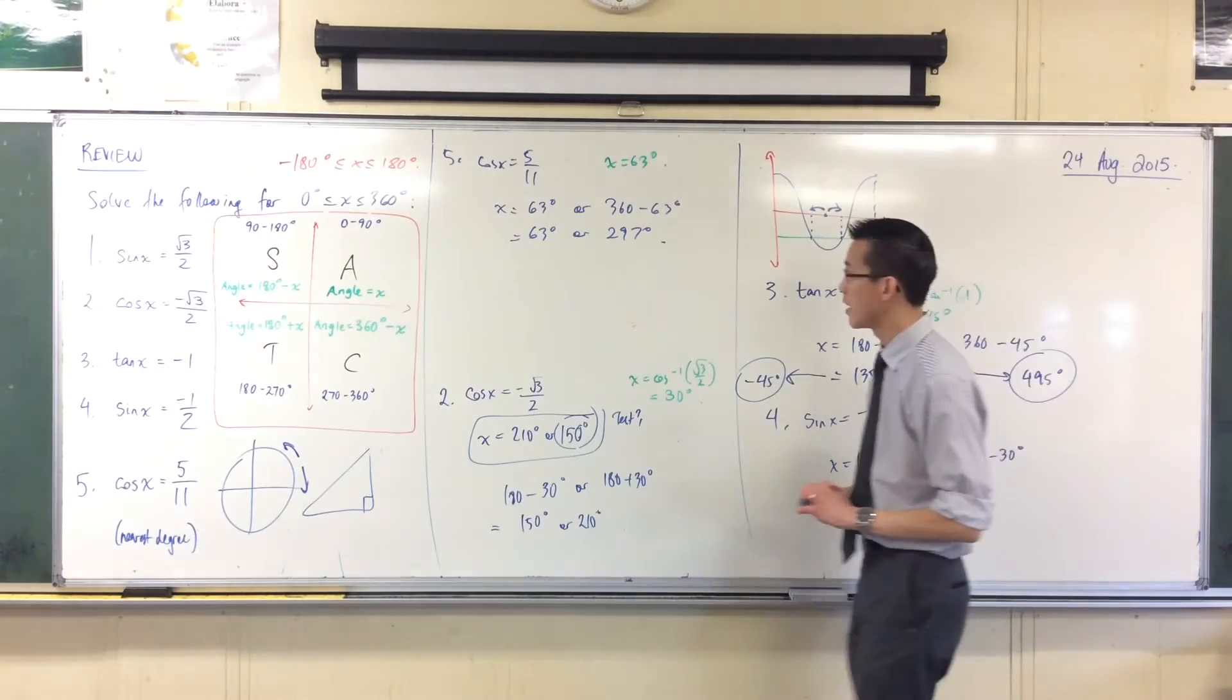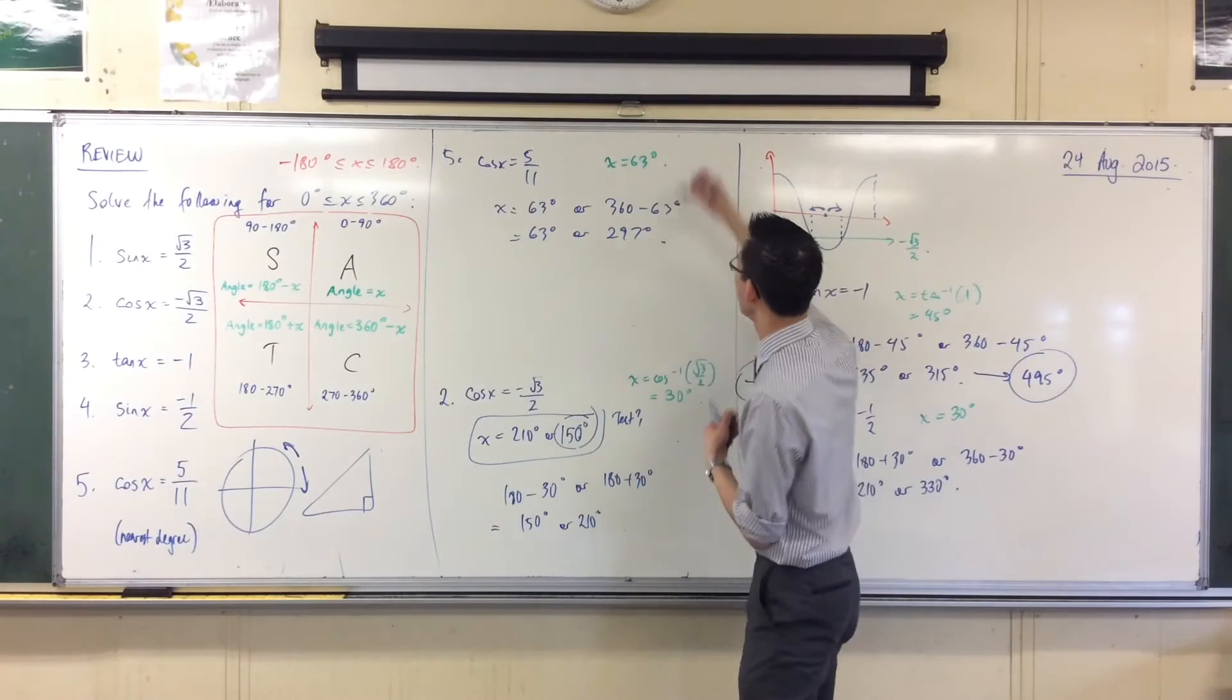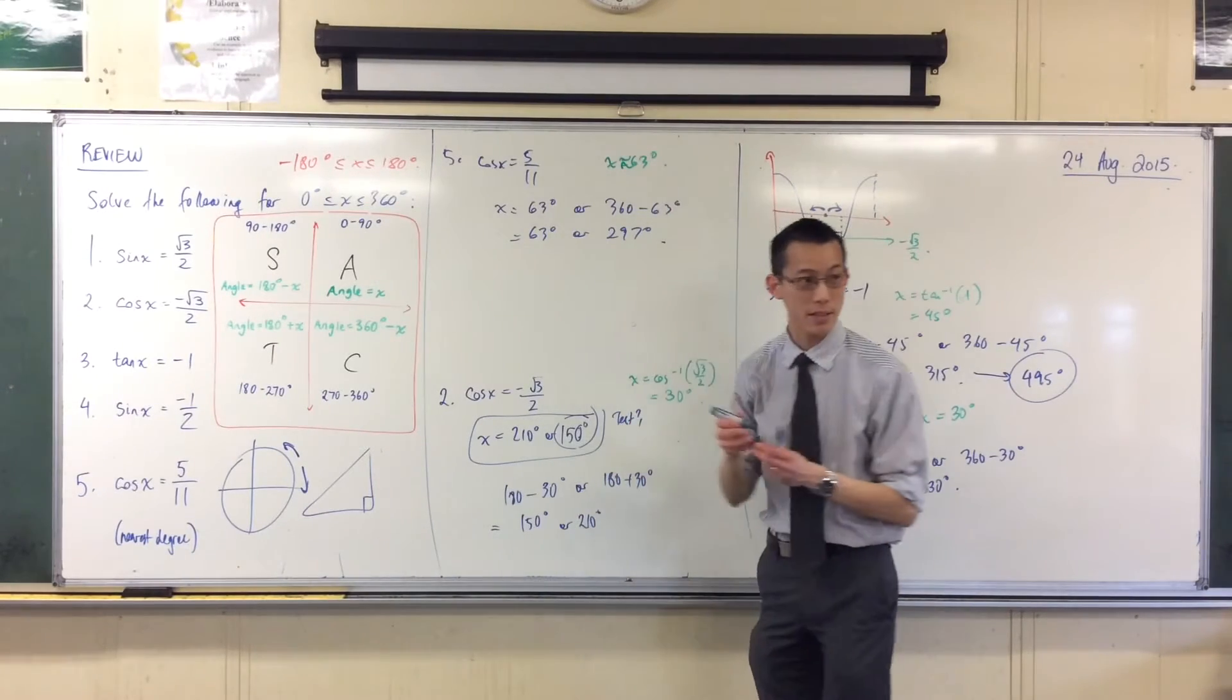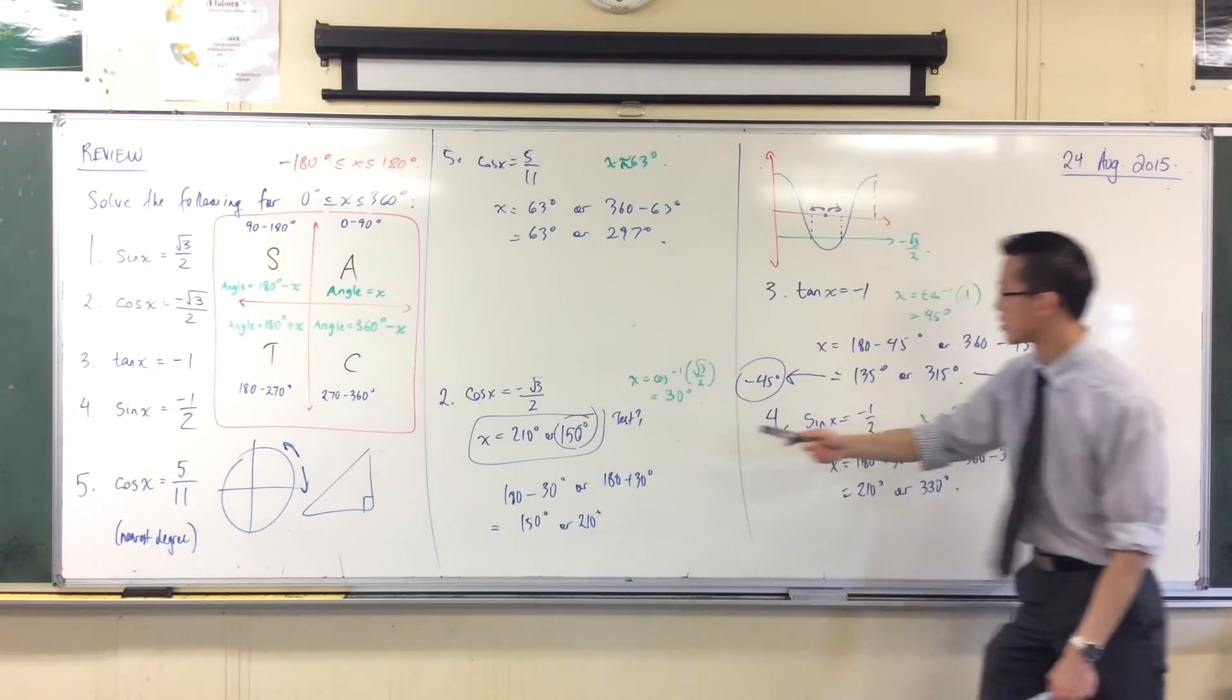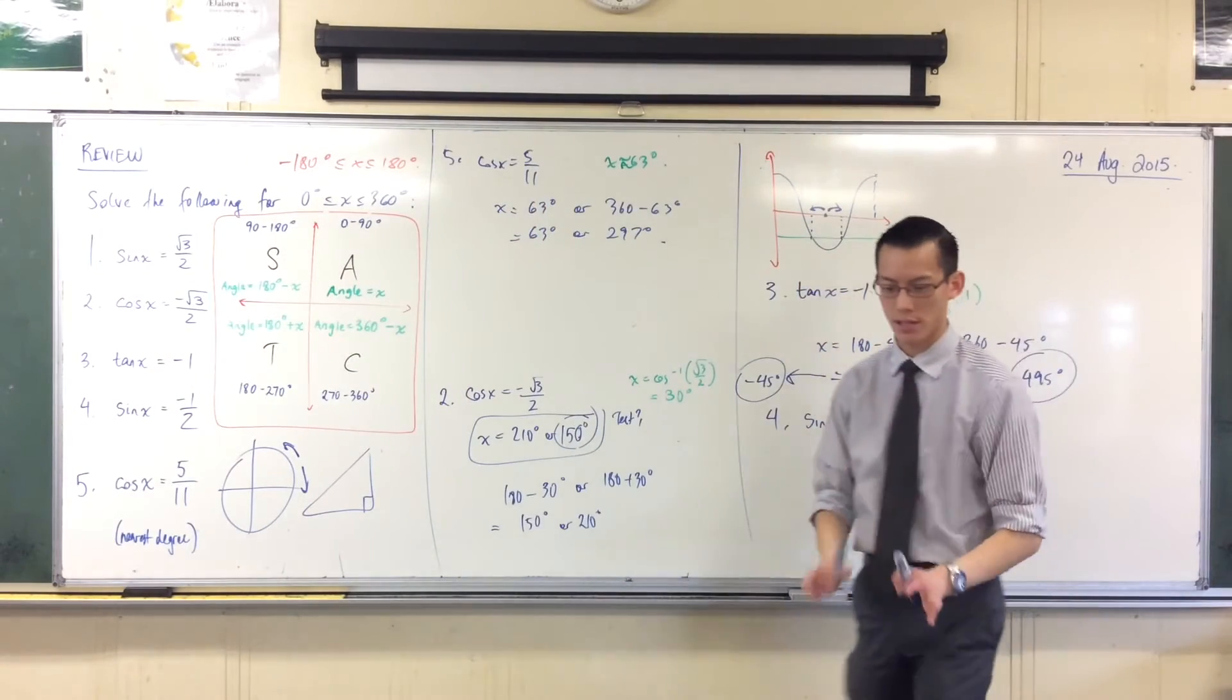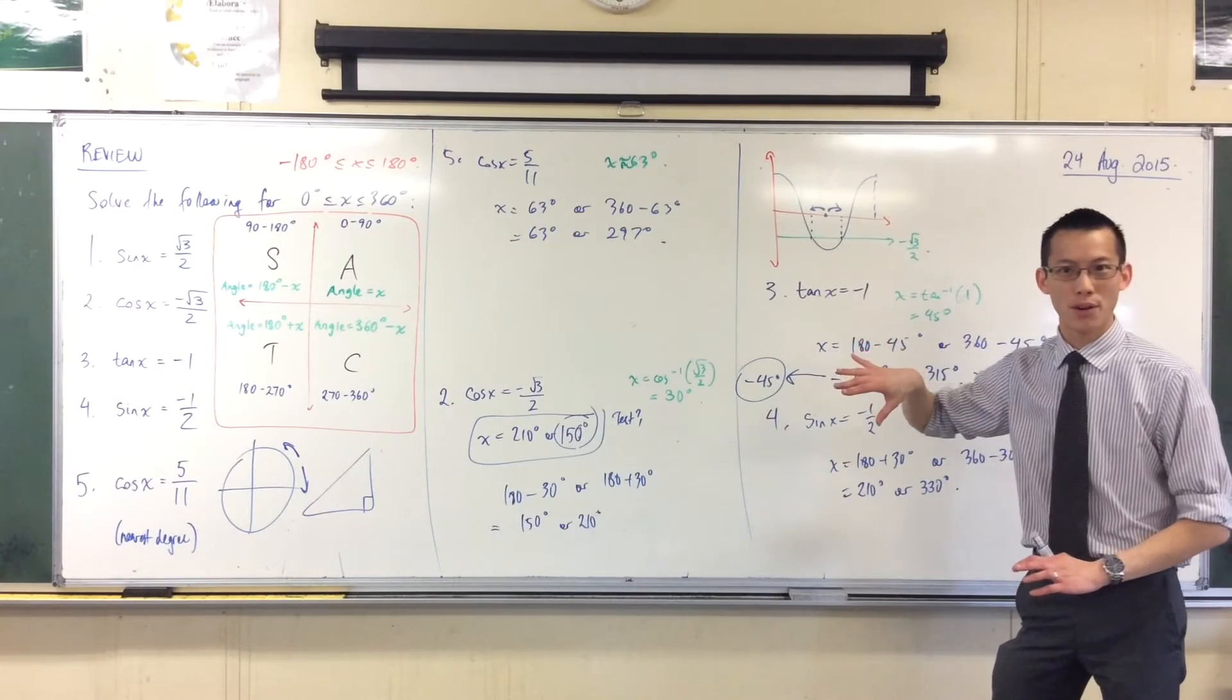And again, you can pop either of those into your calculator. Because we've approximated along the way, that 63, I assume, has some decimal places after it. We're not going to get exactly 5 over 11, the way we've got exactly this or exactly this. But it's close enough to a margin of error, alright? Any questions on those before we move on?